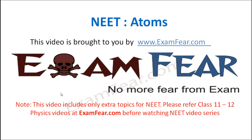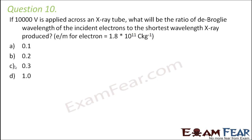Hello friends, this video on NEET ATOMS is brought to you by examfear.com — no more fear from exam. Question number 10: If 10,000 V is applied across an X-ray tube, what will be the ratio of de Broglie wavelength of the incident electrons to the shortest wavelength X-ray produced?